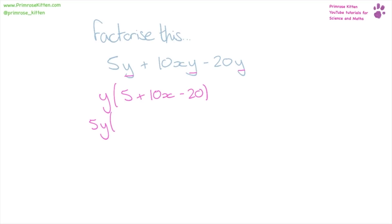So 5 divided by 5 is going to give us 1, then 10x divided by 5 is going to give us 2x, minus 20 divided by 5 is going to give us minus 4. So 5y plus 10xy minus 20y factorises to 5y outside the brackets, 1 plus 2x minus 4 inside the brackets.